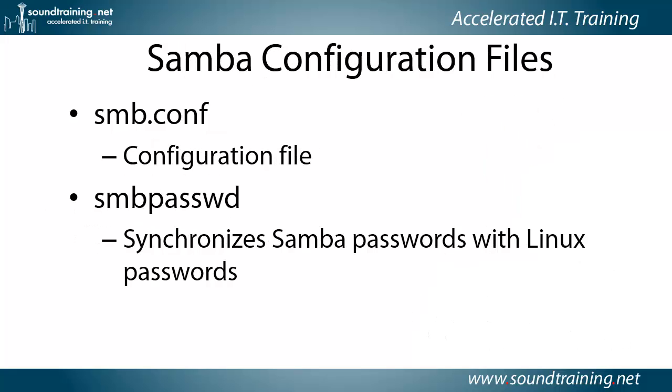In order to configure Samba, there are two files you need to know about — one which you edit directly and one which you edit indirectly. You edit directly the smb.conf file, which is the configuration file, typically located at /etc/samba/smb.conf. The file you edit indirectly with the smbpasswd command is named smbpasswd, and it is the file that synchronizes Samba passwords with Linux passwords.